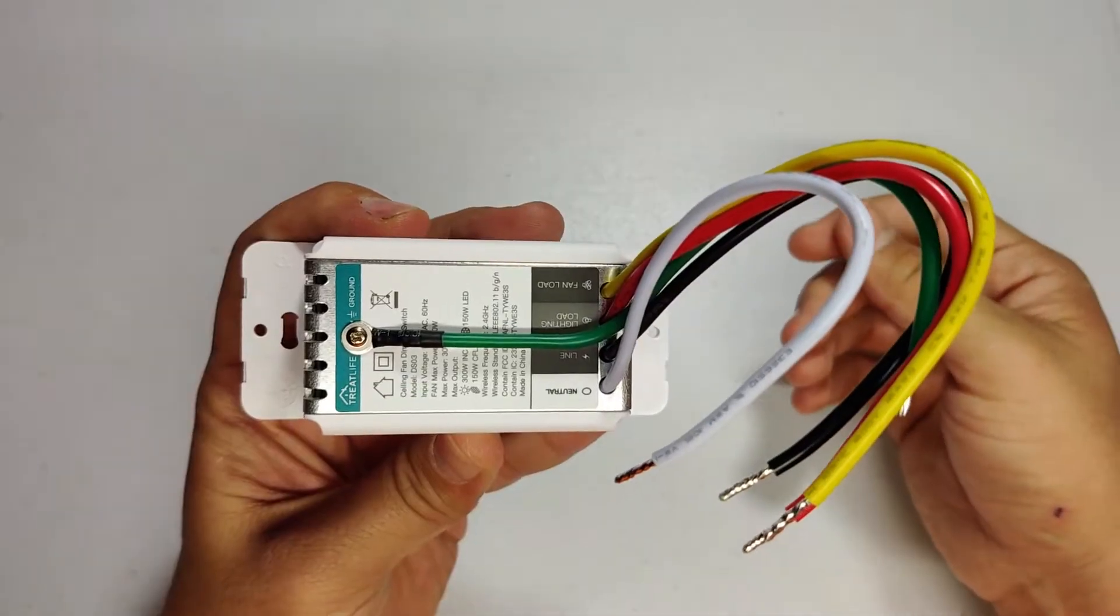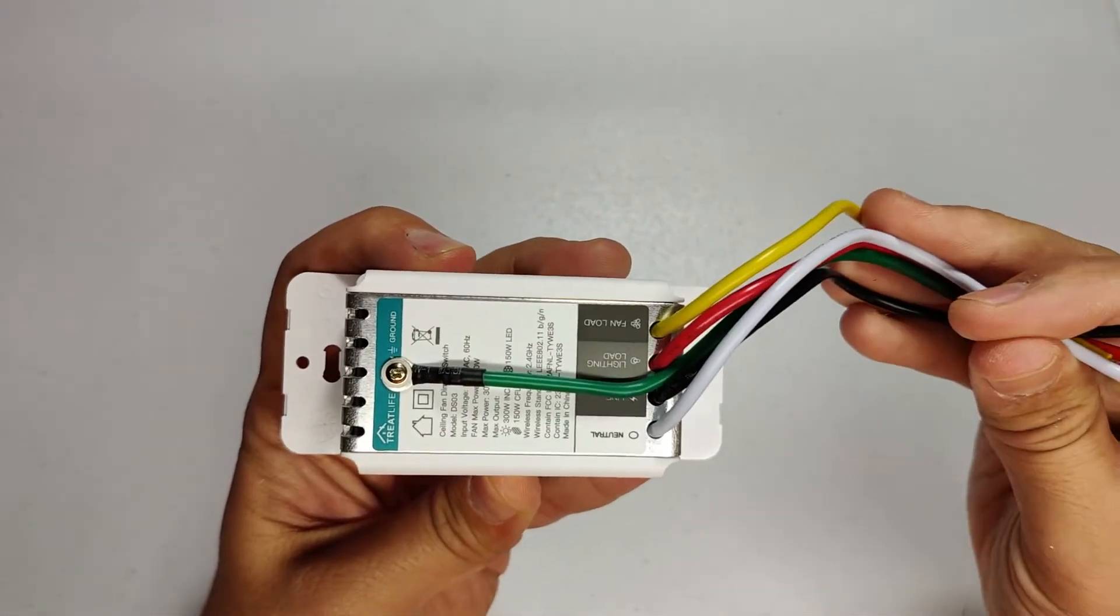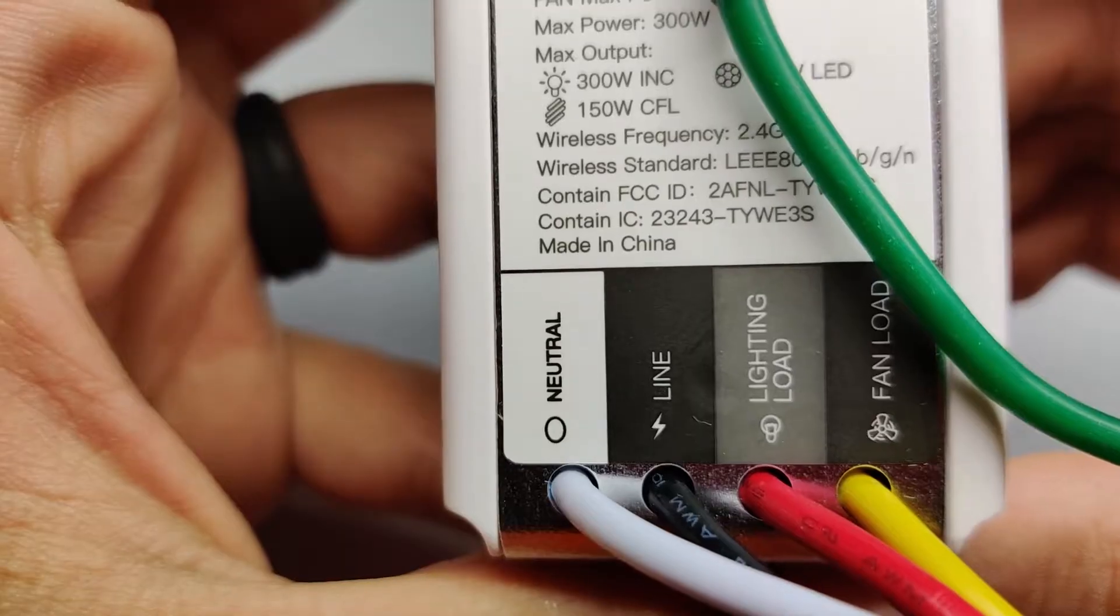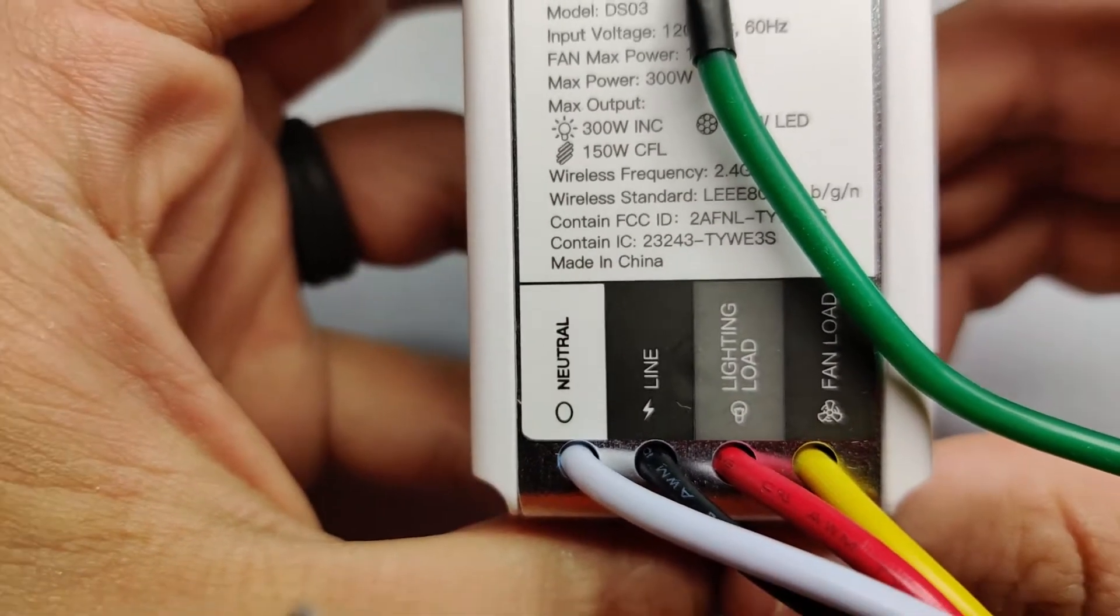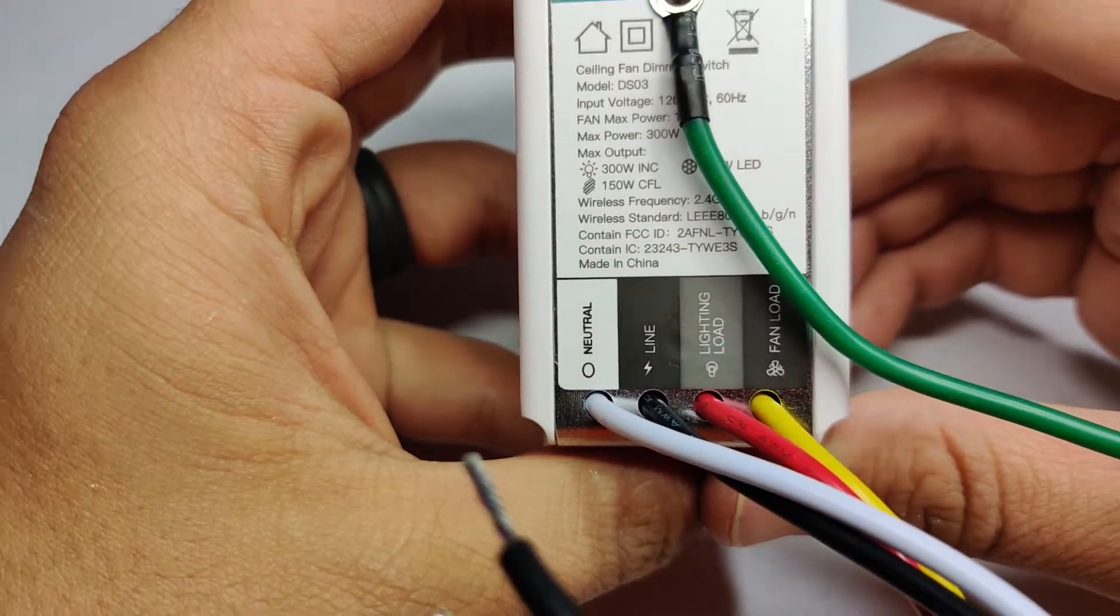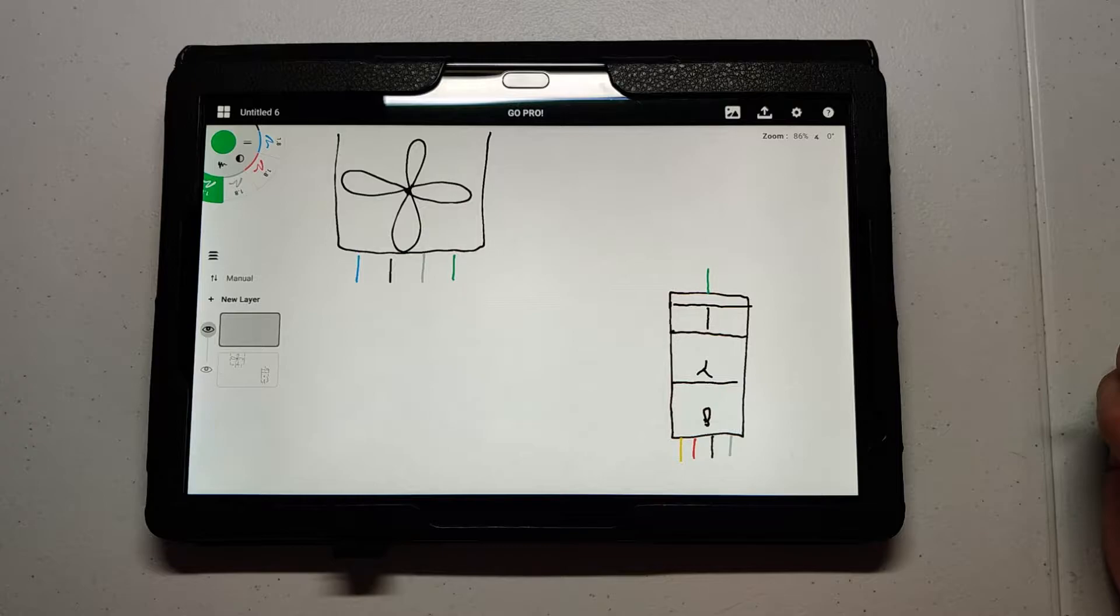I'll quickly try to explain how the wiring works. You have five wires coming out of the switch: you have the neutral white, you have the line black, you have the lighting load red, you have the fan load which is yellow and then you have the green one which is the ground.